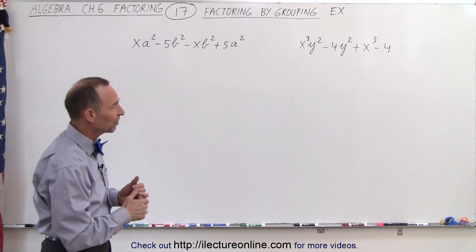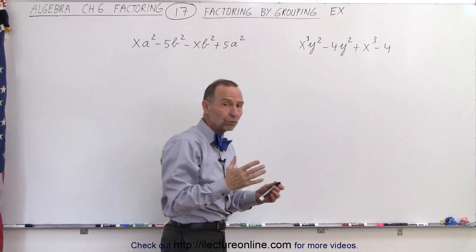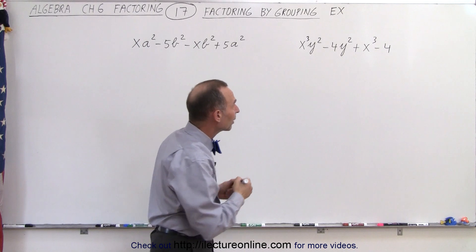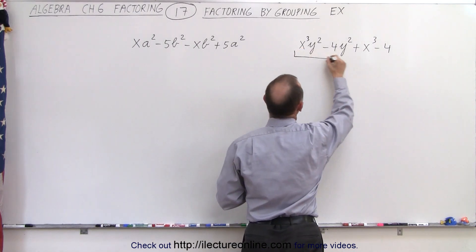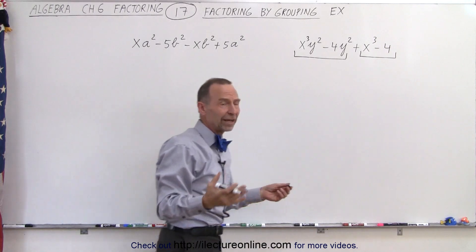So let's take a look at our first example. Notice we have a y-square and a y-square there, so maybe we want to group those two together and factor out a y-square. Let's do that, but then we take a look at this group right here and there doesn't seem to be anything we can factor out.